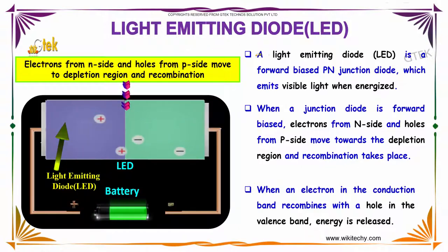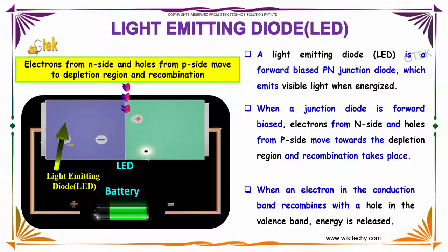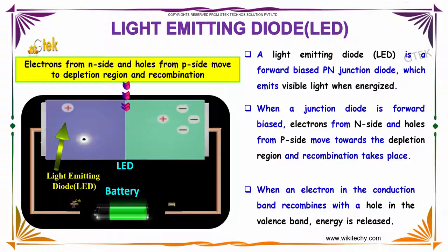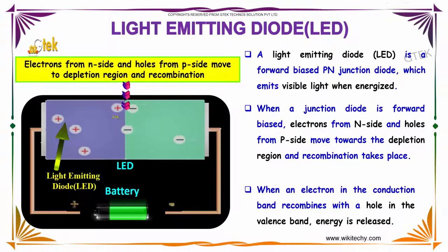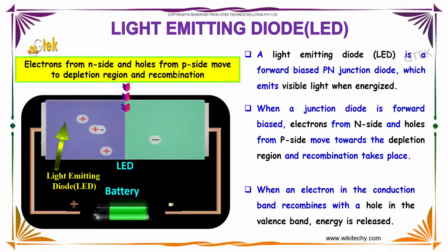What is it? A light emitting diode is a forward biased PN junction — positive connected to positive, that's forward biased — which emits visible light when energized.